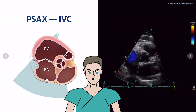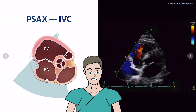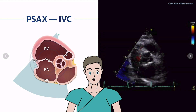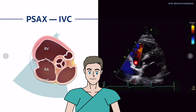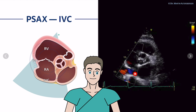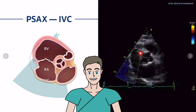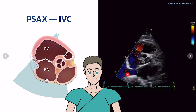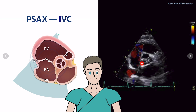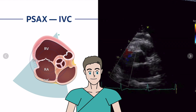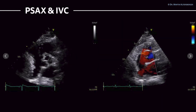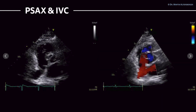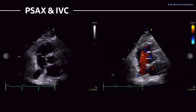Another structure you can see — and shouldn't mistake for pathology — is the IVC, the inferior vena cava. With color Doppler, you can confirm the structure is entering the right atrium. Here we see the interatrial septum, the tricuspid valve with trivial tricuspid regurgitation, the RVOT, and the IVC in the center, as well as the aortic valve. Two more examples show a very prominent IVC, confirmed again with color Doppler.